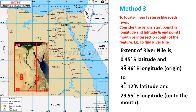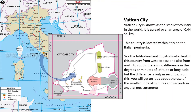An interesting fact about the world's smallest country: Vatican City is spread over an area of 0.44 square kilometres and is located within Italy on the Italian peninsula. Its latitudinal and longitudinal extent shows no difference in degrees or minutes — the difference is only in seconds. This illustrates the use of the smaller units of minutes and seconds in angular measurement.